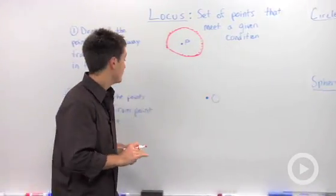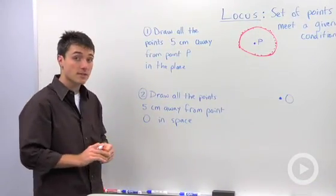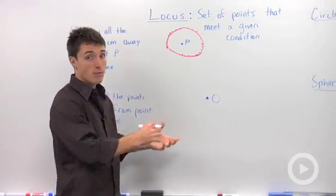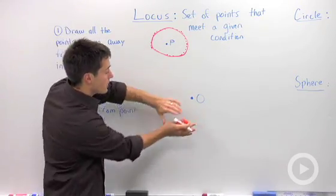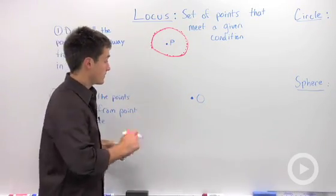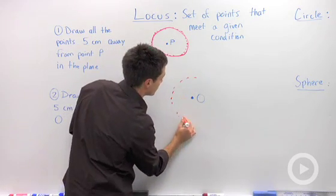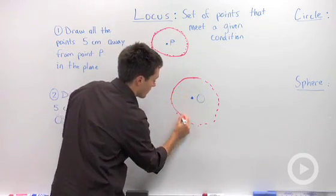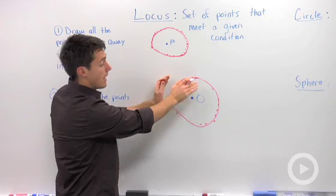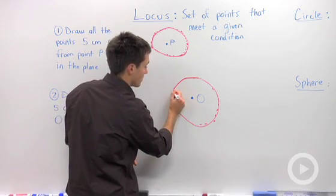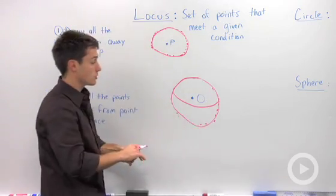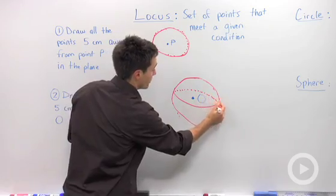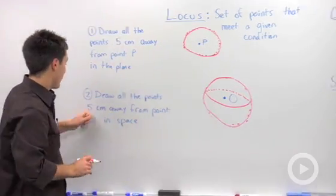Let's go back to the second example. The second example says draw all the points five centimeters away from point O in space. So we've got point O, and obviously I won't be able to draw space, which is coming out at you and going into the board, but I can kind of make a guess. What it's going to look like is we're going to have all of these points that'll be in the plane of the board, and then points that come out of the board. I can draw a curve here to show all the points coming out, and a dotted line for all the points that go back into the board that are five centimeters away.